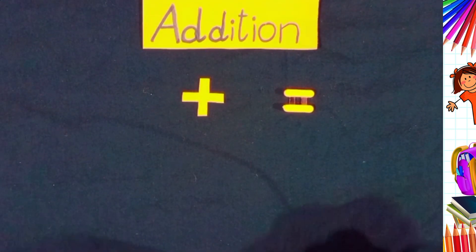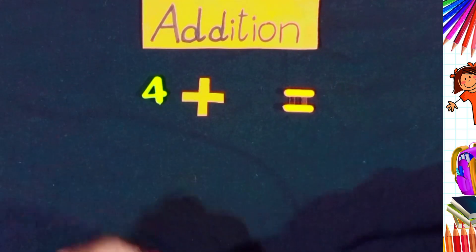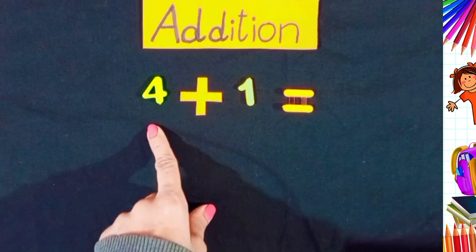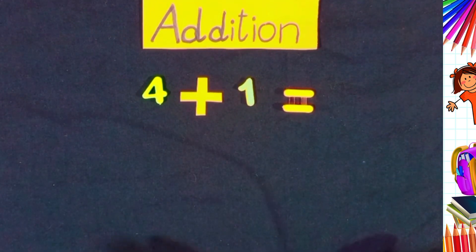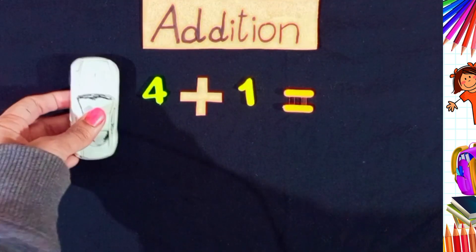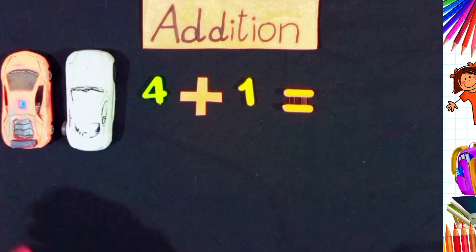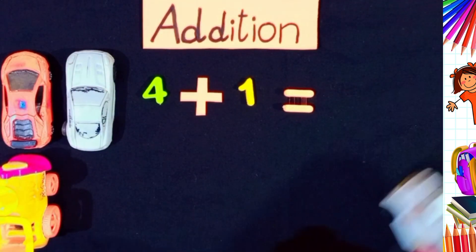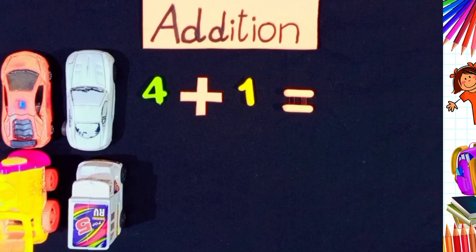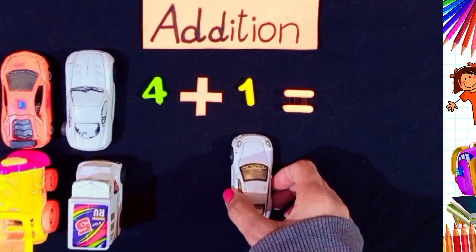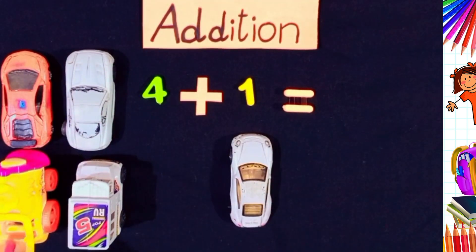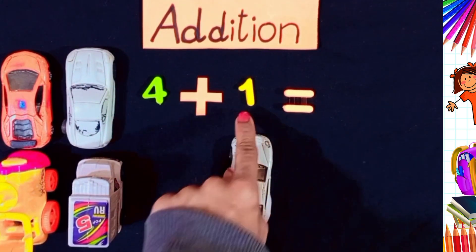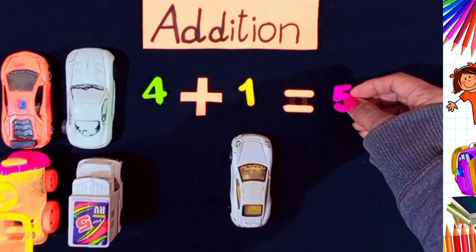The next is 4 plus 1. 4 plus 1 equals to what? 1, 2, 3, and 4. 4 plus 1. Let's count. 1, 2, 3, 4, 5. 4 plus 1 equals to 5.